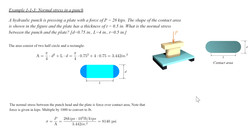This problem looks simple, but there is something different from the previous problems. In this case, we are not determining the internal stress in the plate or in the punch, but we are determining stress on the contact area between these two parts. Also, if the force is strong enough to punch the plate and create a hole, other types of stresses will develop within the plate, which we haven't talked about yet. In the next lecture, we will discuss different types of stresses and how to calculate them.